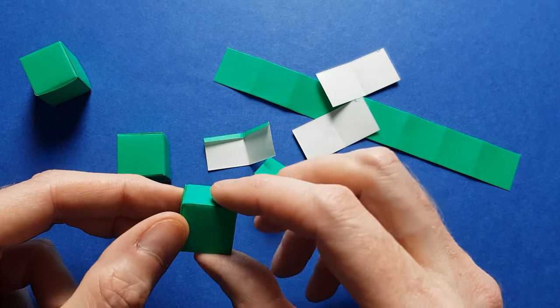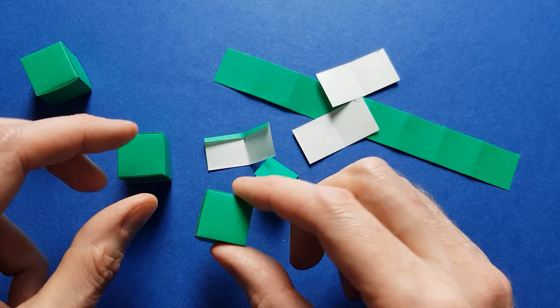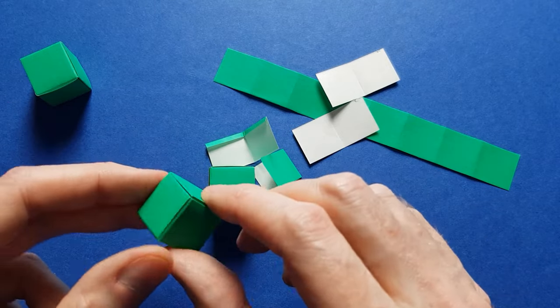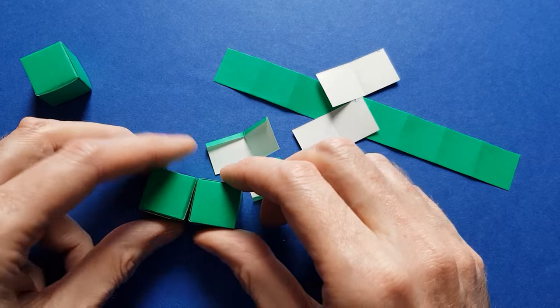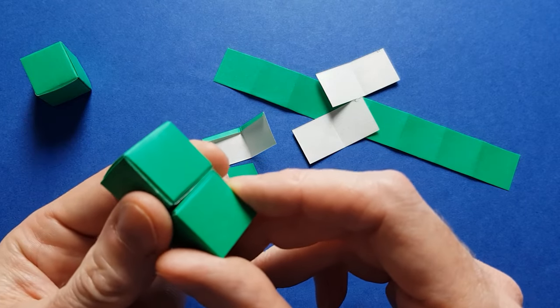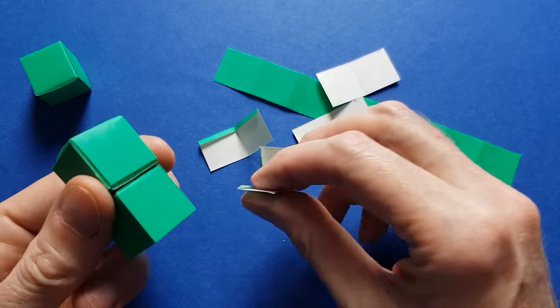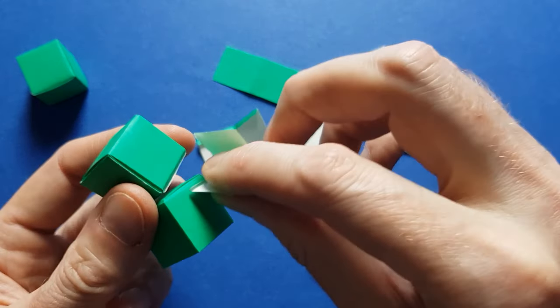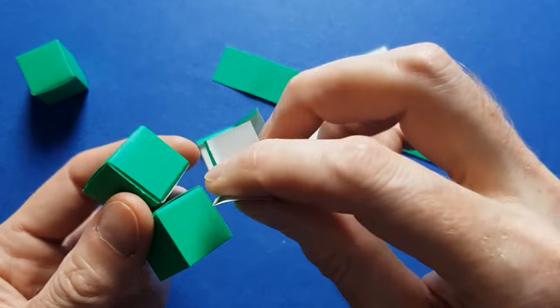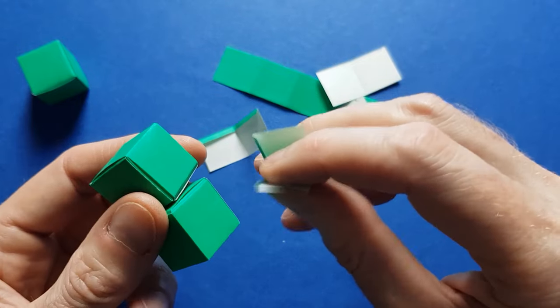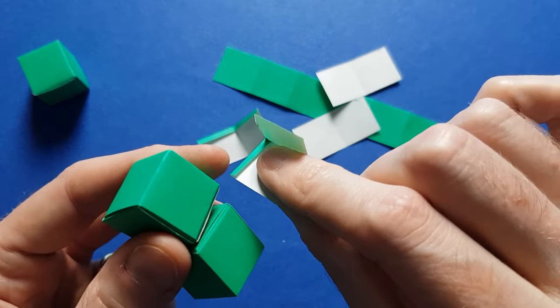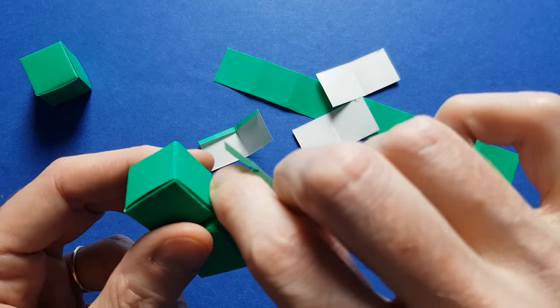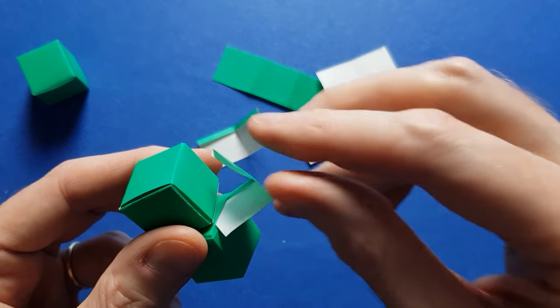So you can select two openings, and same thing on the other cube. And then we just have to take our clip. And we'll insert one side of the clip in the first cube, and the other side on the second cube. So start with the edge with the fold, and you can insert it like this.